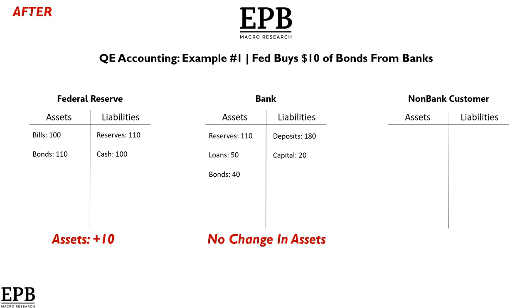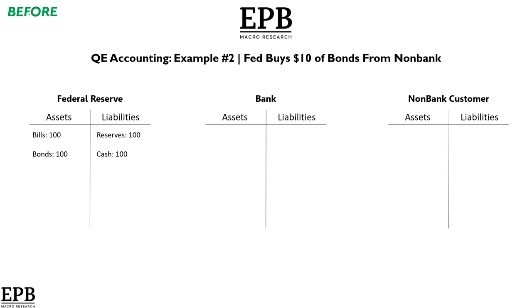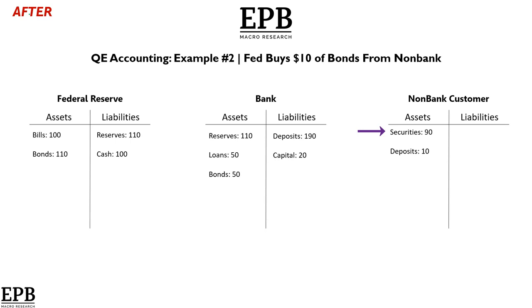Now if we go to example two, where the Fed buys $10 of bonds from a non-bank: we have $200 of assets and liabilities at the Fed, $200 at the bank, and $100 of assets at a non-bank. When the transaction clears, the Fed wants to buy $10 of bonds from the non-bank. The non-bank's securities go from $100 to $90. The bank's bonds stay at $50; it's the reserve account that goes up. The Federal Reserve assets go up by $10, the bank assets go up by $10, and the non-bank assets stay the same — but new money is created. There's a new $10 deposit. That's real cash. That cash can be used anywhere, unlike reserves, which cannot circulate freely.